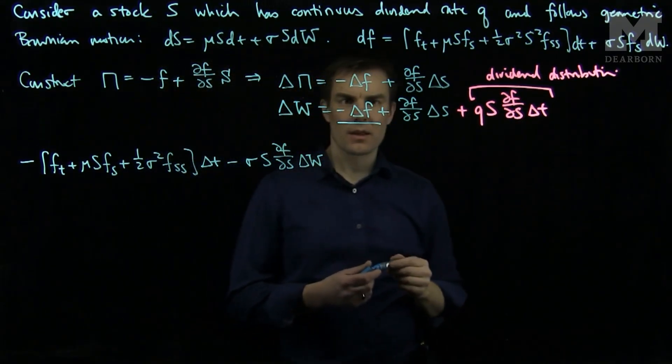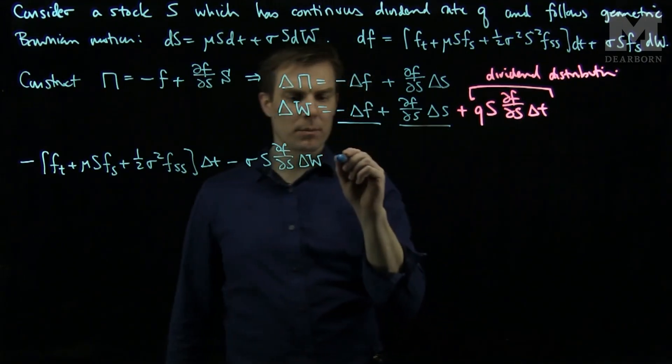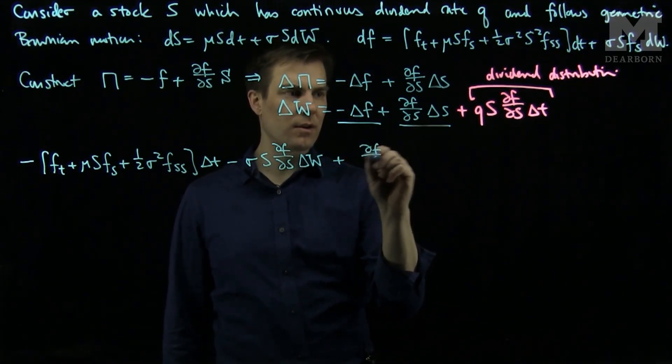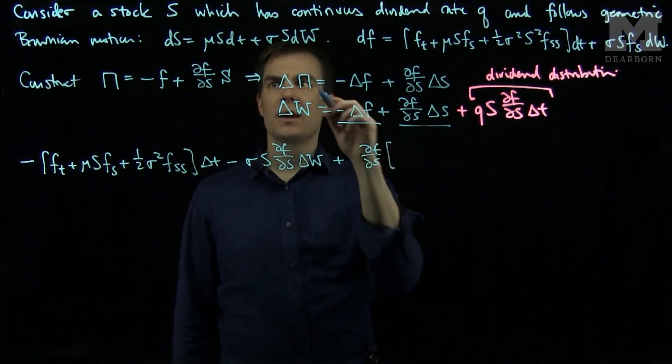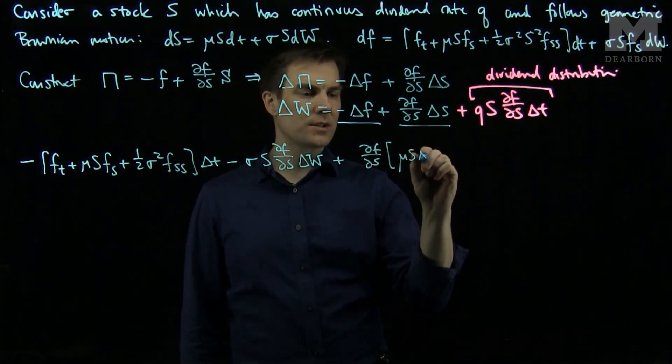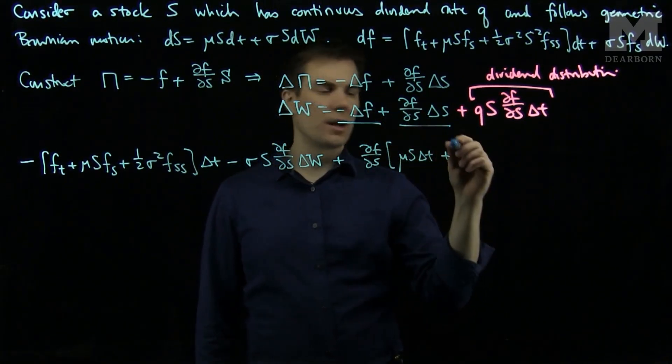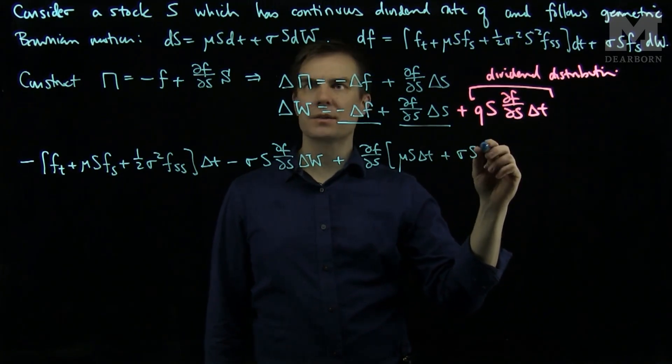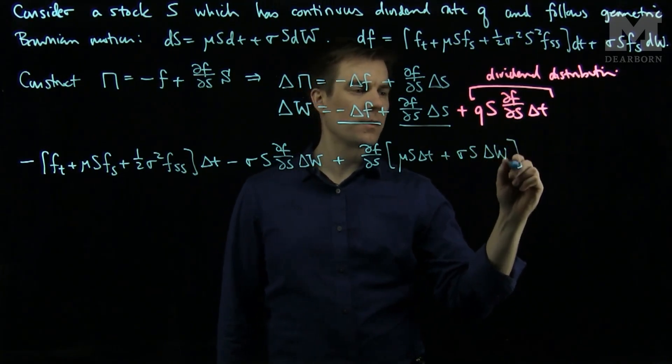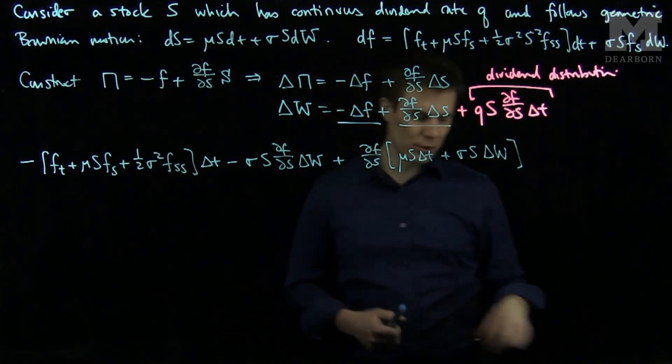Then I will have my terms plus partial F partial S and then mu S delta t plus sigma S delta W. And finally I will have my distribution terms.